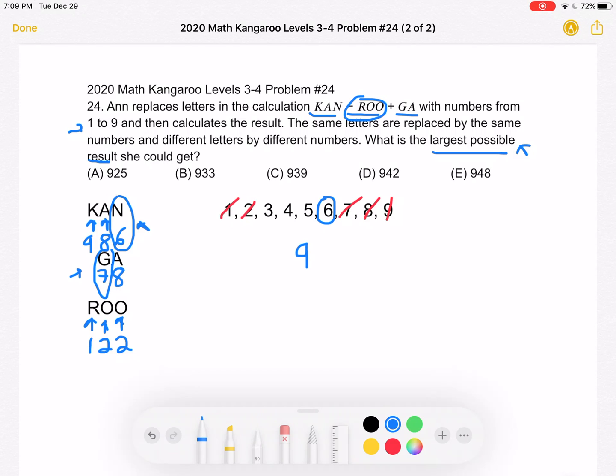Okay, so now all we have to do is compute our result. We have 986 plus 78, which will give us 1064. And then we need to do 1064 minus our ROO, which is 122. And we get a result of 942, which matches answer choice D.